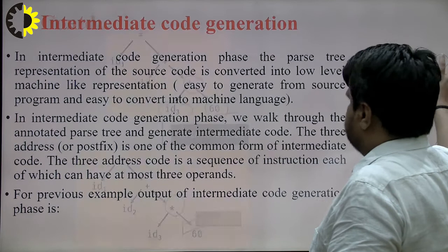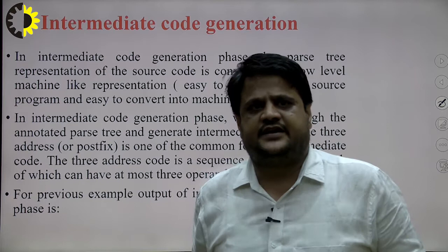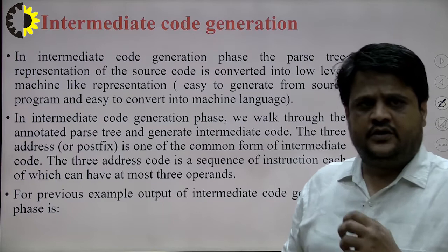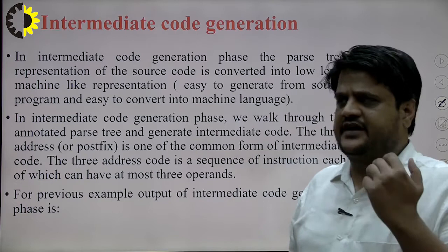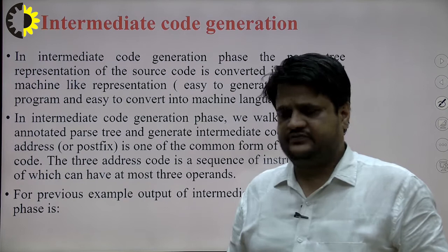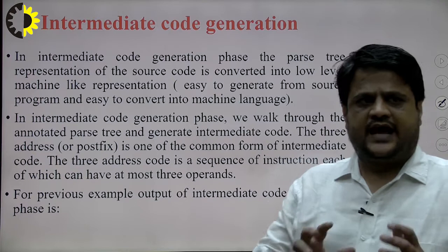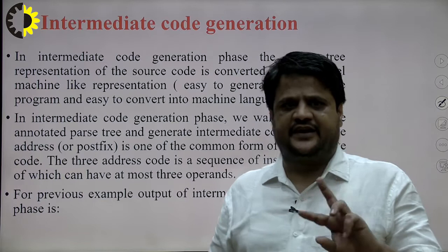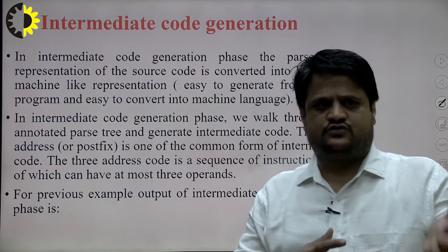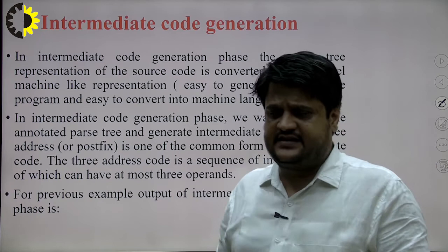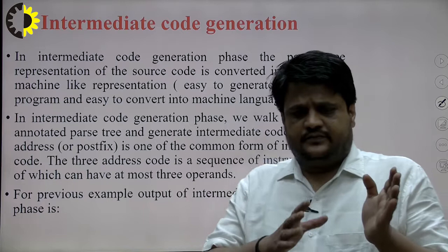The next phase is the intermediate code generation phase. In this phase, the compiler represents the source code in a low-level, machine-like representation that is easy to generate from the source program and easy to convert into machine language. The compiler walks through the annotated parse tree and generates intermediate code. There are two common types of intermediate code: three address code and postfix code. A graphical representation — the syntax tree — can also be used as intermediate code. The most popular of these three is the three address code.